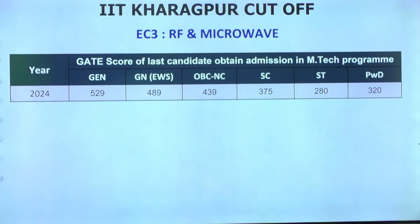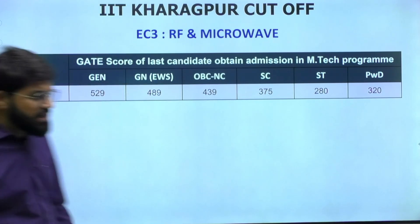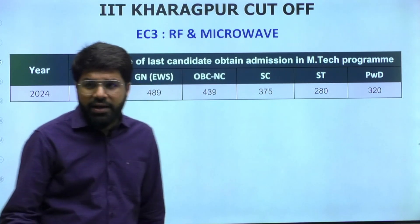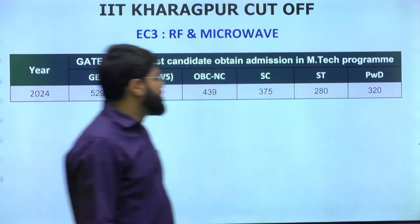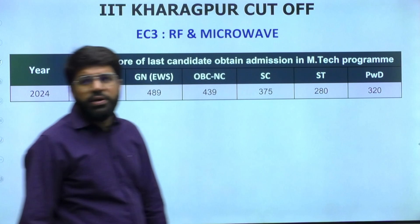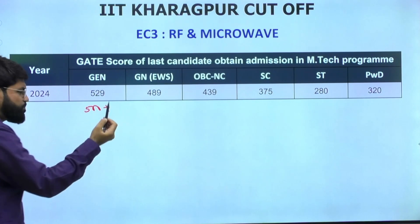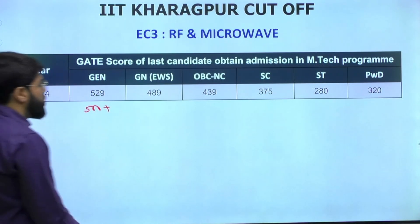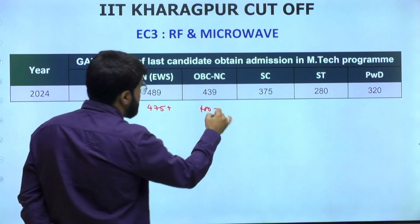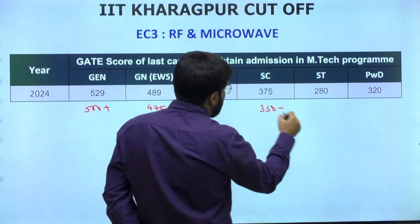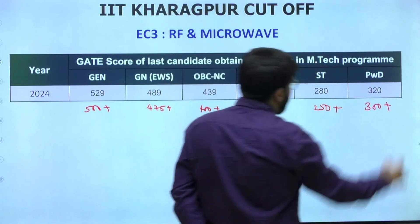The next course is EC3 - RF and Microwave - which you can obtain at lower GATE scores. This specialization at a good IIT like Kharagpur is available at low scores. Last year's cutoffs: General - 529, EWS - 489, OBC - 439, SC - 470, ST - 375, PWD - 320. Safe score recommendations: General - 500+, EWS - 475+, OBC - 400+, SC - 350+, ST - 250+, PWD - 300+.